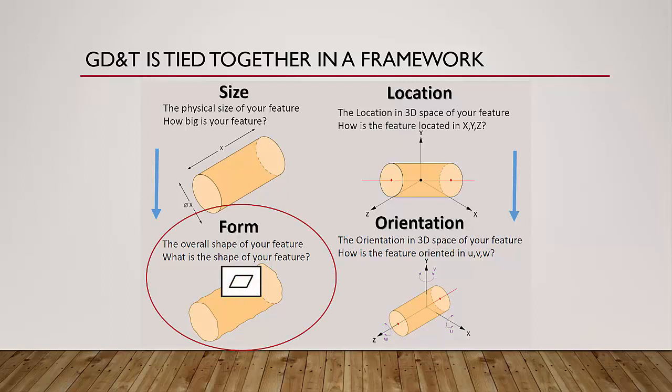For example, flatness only controls form, or the shape of how wavy a surface can be. It does not control how big something is, or its location or orientation in 3D space. Breaking down the symbols into these four elements is extremely helpful for making the standard more approachable.